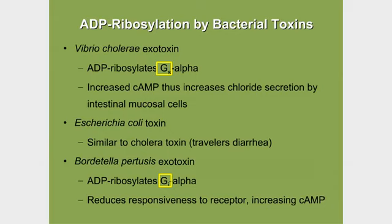Because alpha I does not work, adenylyl cyclase is free to start making cyclic AMP. It reduces responsiveness to the receptor and causes an increase in cyclic AMP — and cyclic AMP drives all the problems with pertussis.